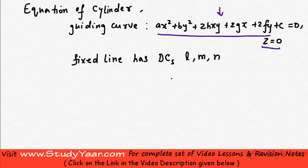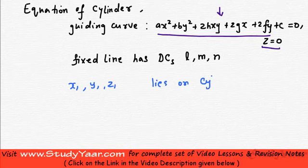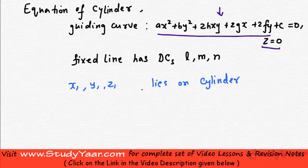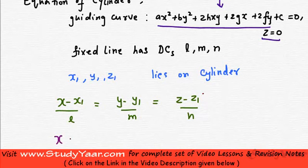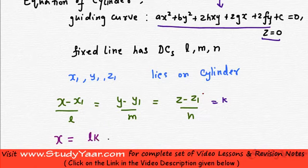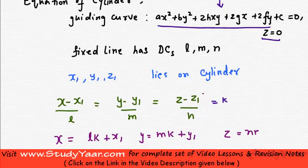My cylinder is the locus of lines which are parallel to this fixed line. Let's suppose that x₁, y₁, z₁ is an arbitrary point that lies on the cylinder. Since I know a point and my lines are parallel to the fixed line, the equation of a generator through this point is: x minus x₁ upon l equals y minus y₁ upon m equals z minus z₁ upon n, equal to k. So a point on such a line is: x = lk + x₁, y = mk + y₁, z = nk + z₁.